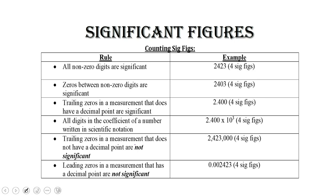So what are the rules for identifying the number of significant figures in a measurement? Let's take a look at the first rule: all non-zero digits are significant — that means 1 through 9. In this example, we've got 2,423, and each one of those digits is significant, meaning each one can be read directly off of a measuring tool. If I have non-zero digits that surround a zero, that zero is also significant. So if I have 2,4,0,3 —